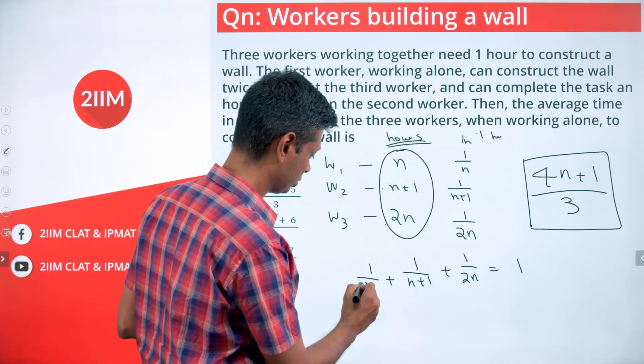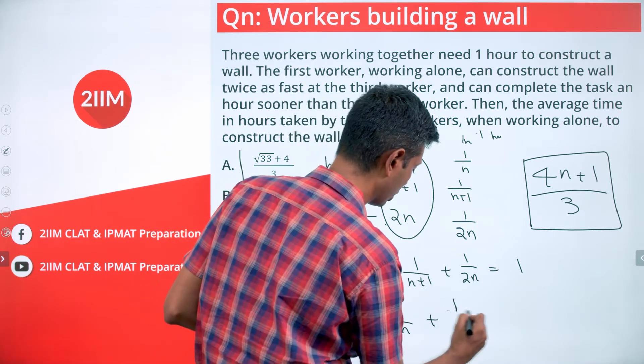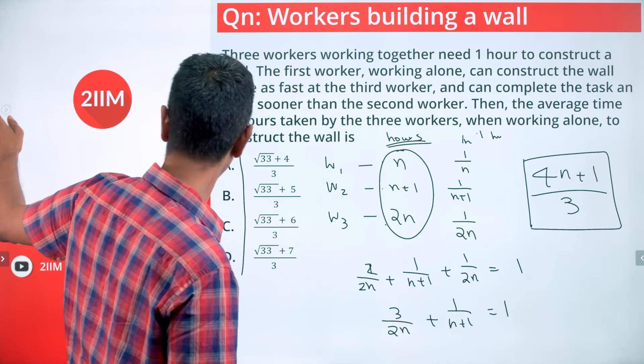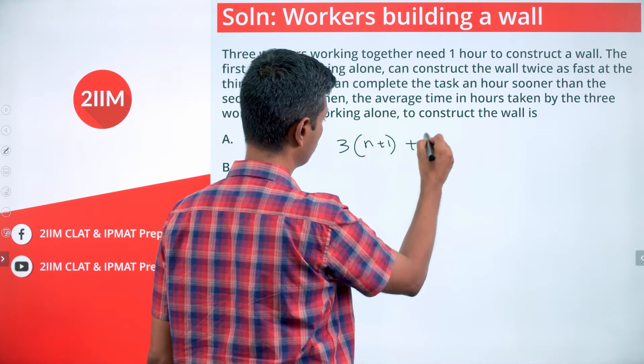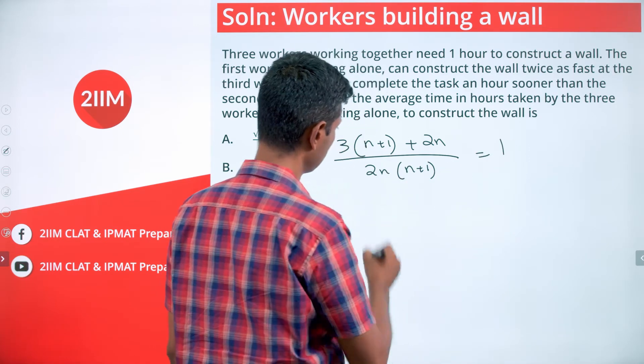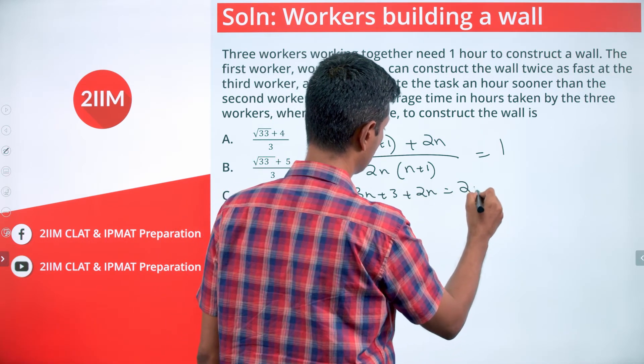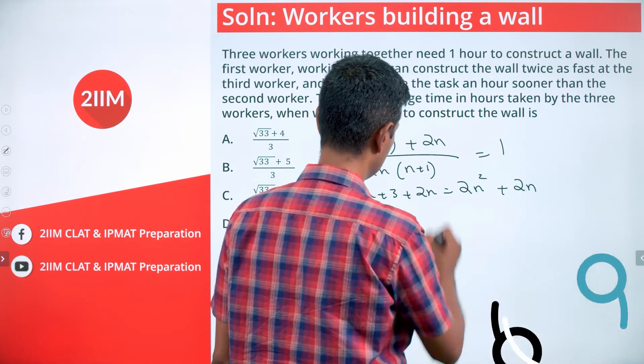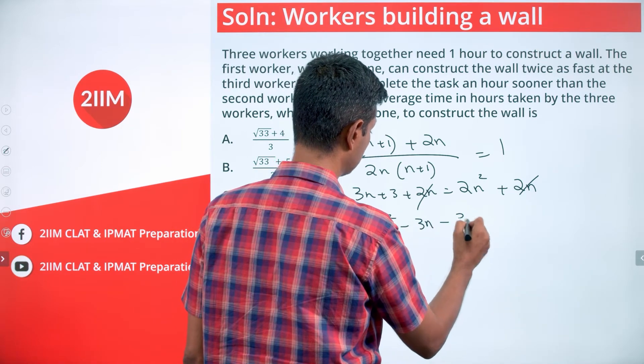Let's simplify this. We can call this 2/(2n). So we have 3/(2n) + 1/(n+1) = 1. Let's take the LCM and simplify. I'm going to go to the next step. 3(n+1) + 2n divided by 2n(n+1) equals one. 3n+3+2n equals 2n^2+2n.